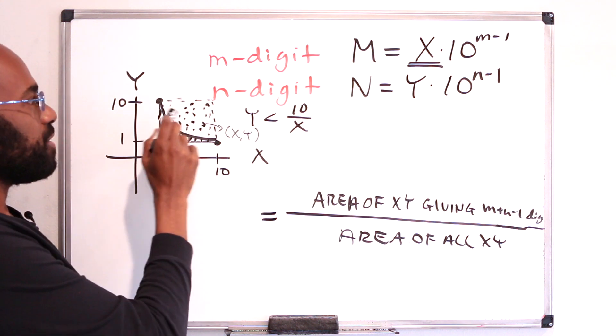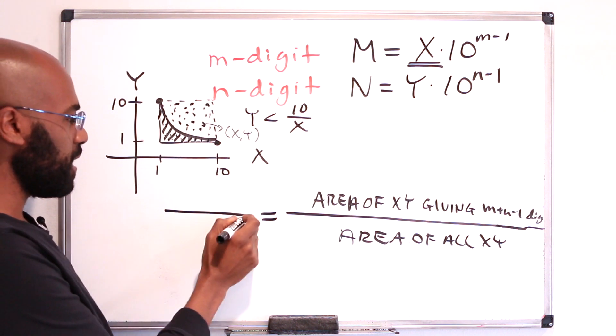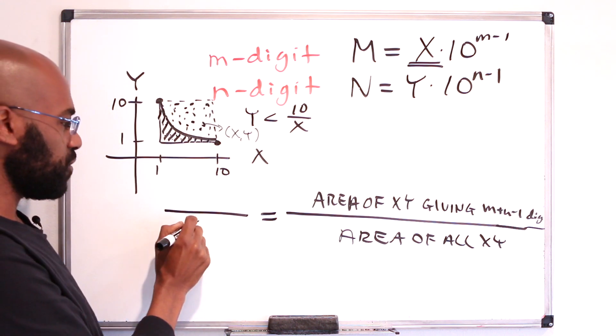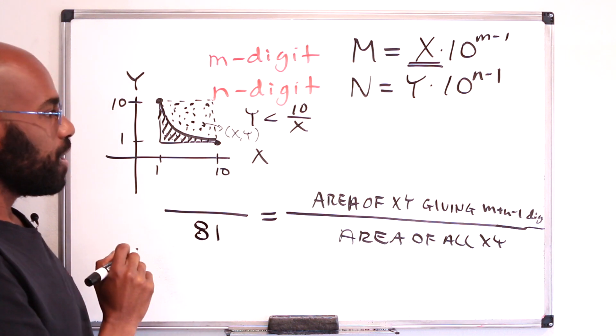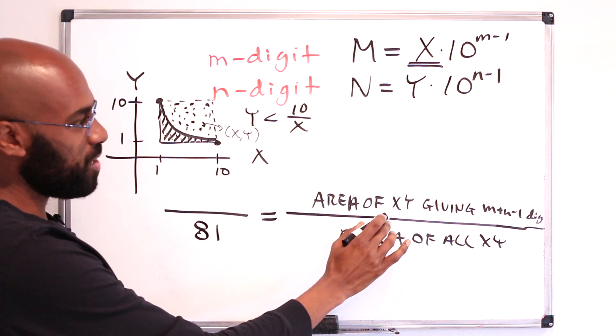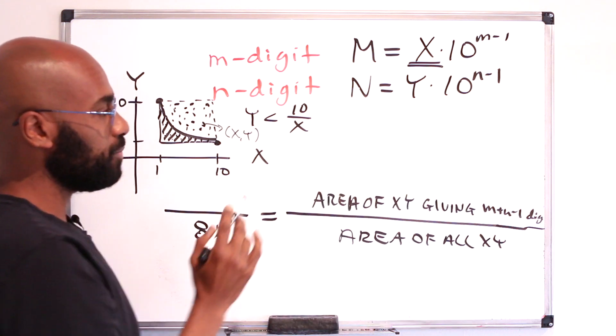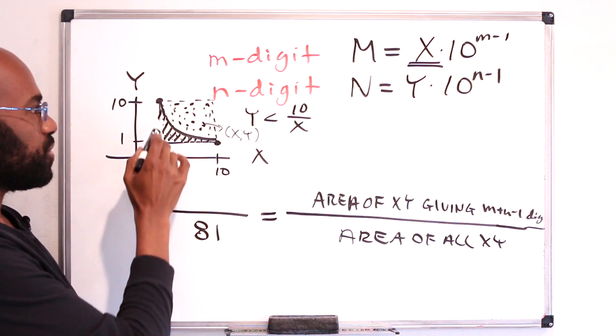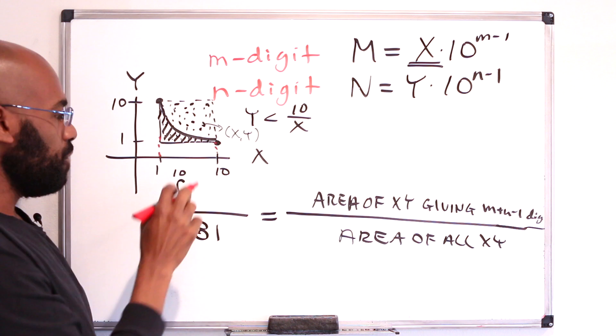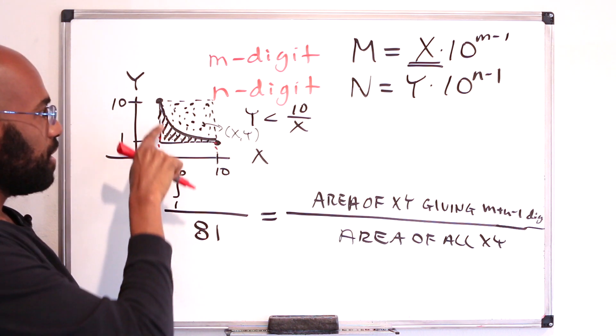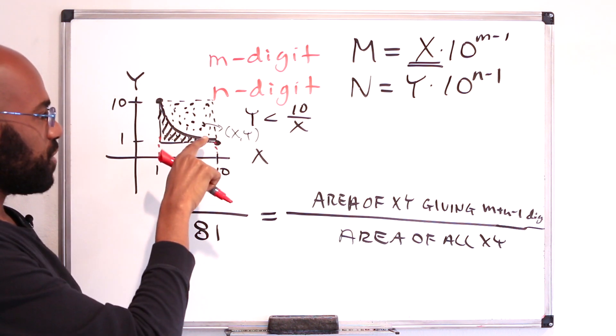So if you look at the area of all possible pairs xy, it's a 9 by 9 square, so the total area is 81. Whereas the area of the region of pairs xy that give us the m plus n minus 1 digit numbers is this area right over here, which is the integral from 1 to 10 of this curve right over here, but we have to subtract this area right over here.